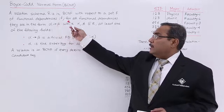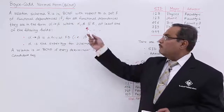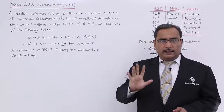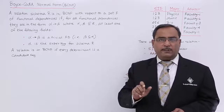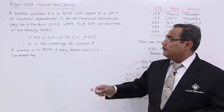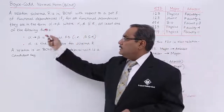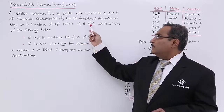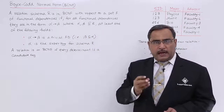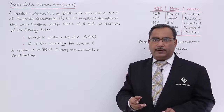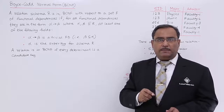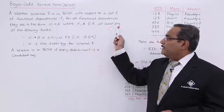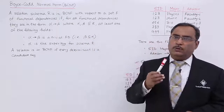A relation schema capital R is in BCNF, that is Boyce-Codd Normal Form, with respect to a set F of functional dependencies. Suppose there is a set F which has all the functional dependencies for the respective database. For all functional dependencies in the form alpha produces beta, where alpha and beta are subsets of capital R, at least one of the following will hold good.